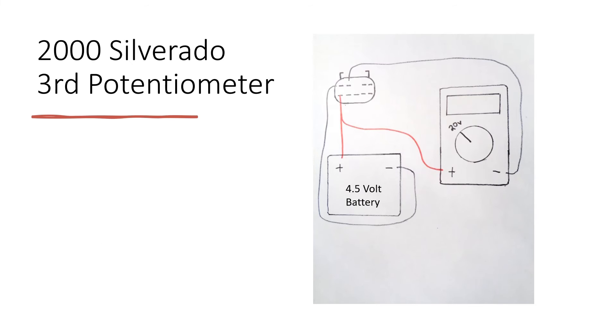For the third potentiometer—yes, this actually has three potentiometers—you connect the negative from the battery to the top left pin, the negative from the multimeter to the second from the top left pin, and the positive from both the battery and the multimeter to the bottom left pin.